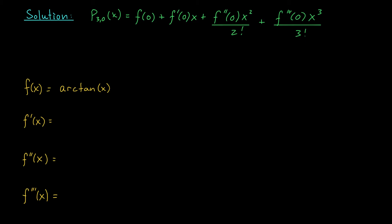Our first task is to find the third degree Maclaurin polynomial for f of x equals arctan x. On assignment 8, you'll see a very efficient way to do this by starting with the Maclaurin polynomials of a related function, 1 over 1 minus x, and using Taylor polynomial shortcuts to turn those into Maclaurin polynomials for arctan x. But since we're going to apply Taylor's inequality later — which requires finding the fourth derivative of arctan x — I'll just find this Maclaurin polynomial by definition: compute derivatives, plug in zero, and put everything together.